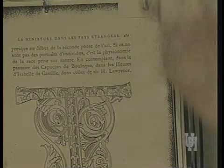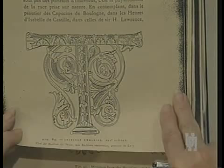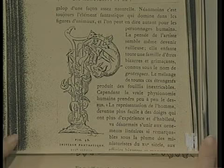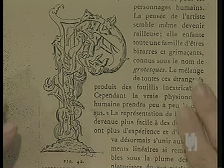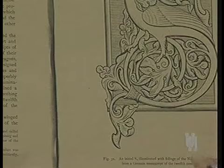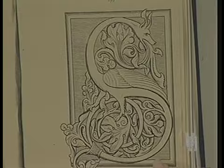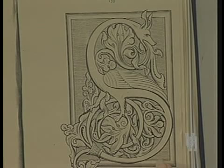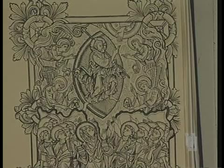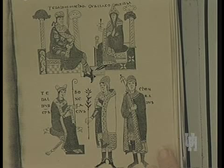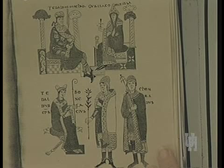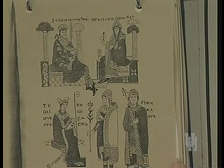Here is an English initial of the 12th century — an initial T. And this is an 'initial fantastique' from a French manuscript of the 12th century, with beasties all over the place, all intertwined. The medieval imagination is going wild. Here is a German initial much more sedate, done in the Northumbrian style taken from English manuscripts. This is an English manuscript — the Benediction of Ethelwald — very classicizing in style from the 11th century.